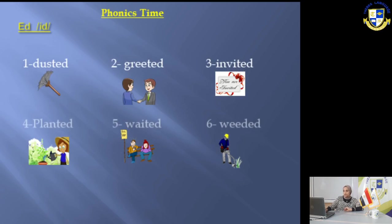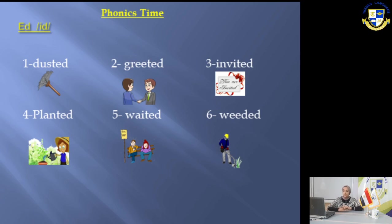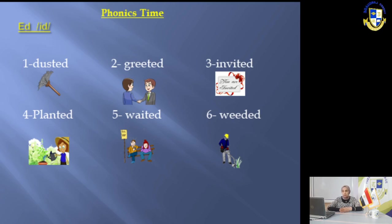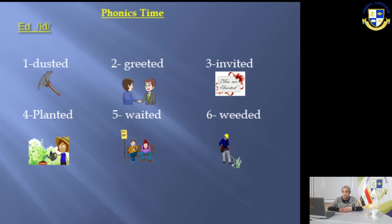Now let's move to slide 8 — phonics time! Sometimes we pronounce the '-ed' ending as 'ed,' and sometimes as 'id.' Number one: 'dusted' — we pronounce it 'id': dusted. Number two: 'greeted' — we also pronounce it 'id': greeted. But the other words, we pronounce them as 'ed.'